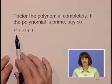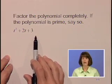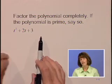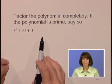The polynomial is t² + 2t + 3. If there were a greatest common factor, we would pull that out, but there's not one.